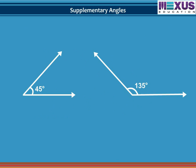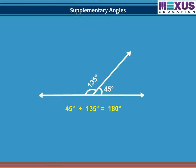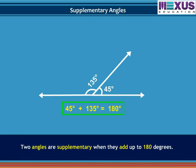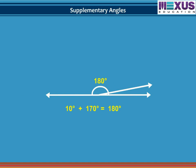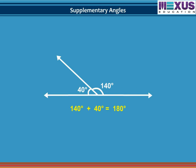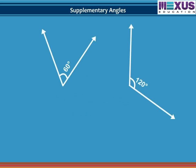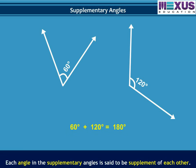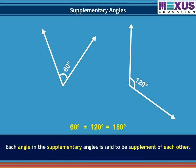Let us add the angles given here. We find that the sum of measures of angles comes to 180 degrees. Such a pair of angles whose sum equals 180 degrees are said to be supplementary angles. If we put two supplementary angles adjacent to each other, they form a straight line — that is, their addition makes a straight angle. For example, 140 degrees and 40 degrees are supplementary as they add up to 180 degrees and form a straight angle. Non-adjacent angles 60 degrees and 120 degrees are also supplementary because their sum is 180 degrees. Each angle in a supplementary pair is said to be the supplement of the other.